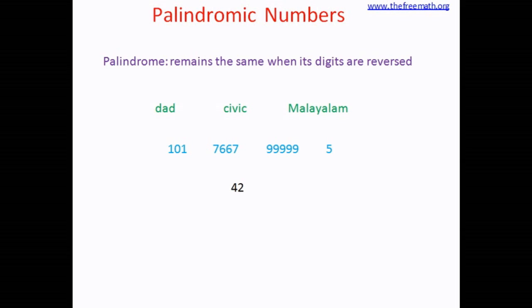Consider number 42. Now if you want to get a palindrome, what you can do is you flip the number, that means you get 24. So if you reverse 42 you get 24. Now add these two numbers, that means 42 plus 24 equals 66, and 66 is a palindrome.